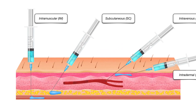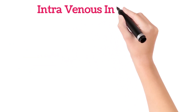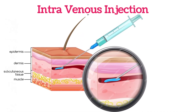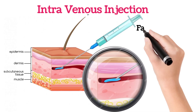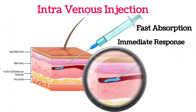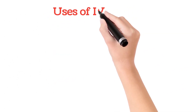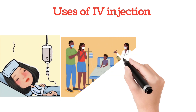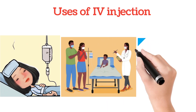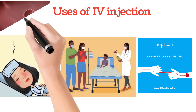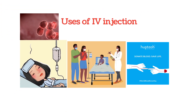First, we are going to see about intravenous injection. In intravenous injection, we inject medicines directly into the vein. As we inject medicines directly into the vein, there is rapid absorption and we will get the response immediately. IV injection is used to administer saline, local anesthesia, general anesthesia, blood transfusion, and chemotherapy for cancer medicines.